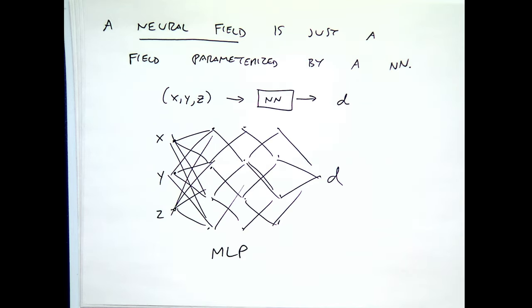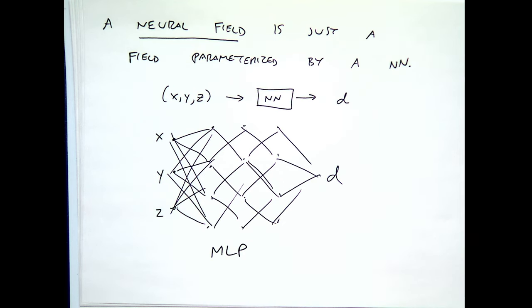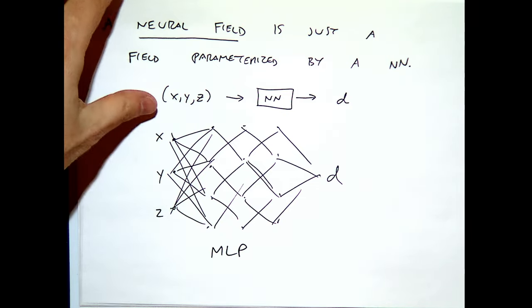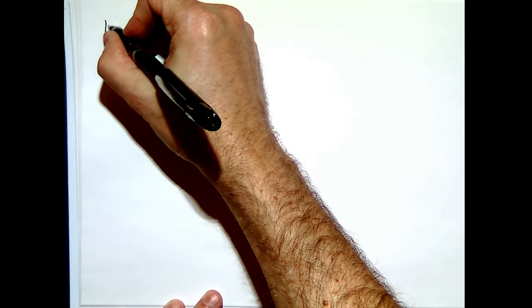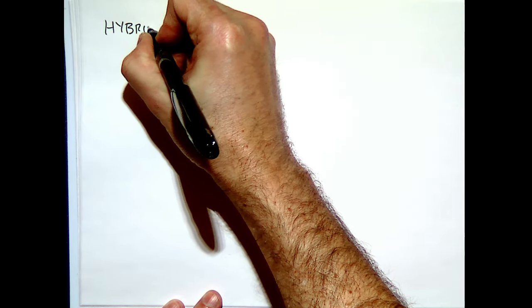I'll put a pin on that for a few minutes and then explain what NERFs are. The last thing I want to mention is that there are a bunch of other hybrid representations of 3D that people have suggested — so-called hybrid representations. One possibility is something called a triplane — a neat idea from a paper by Chan et al. — where you basically have three perpendicular planes.